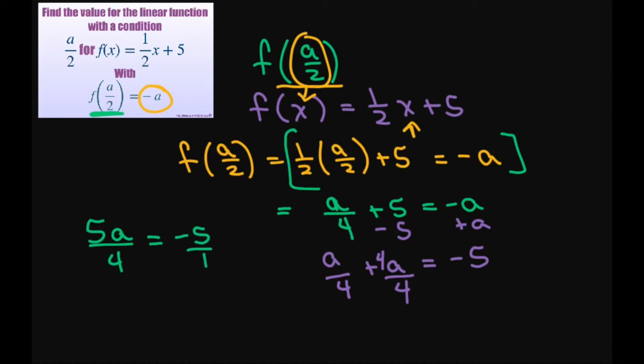I'll put that in fraction form. You cross multiply you get 5a equals negative 20. And divide both sides by 5 you get a equals negative 4. So that's your a but we want a divided by 2.